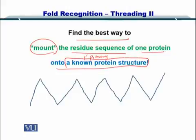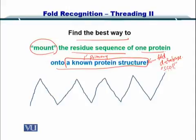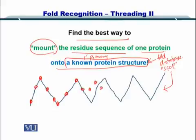This known protein structure comes from a structure database or fold database. One of such databases is called SCOP, which means Structural Classification of Proteins. So if you find a structure in the SCOP database, what you do is put your sequence along the backbone of that structure and see how it matches with the fold from the database.